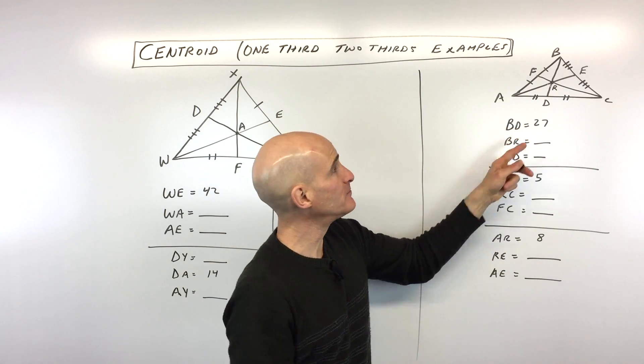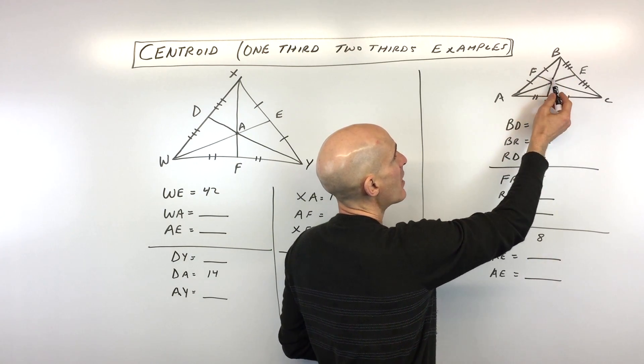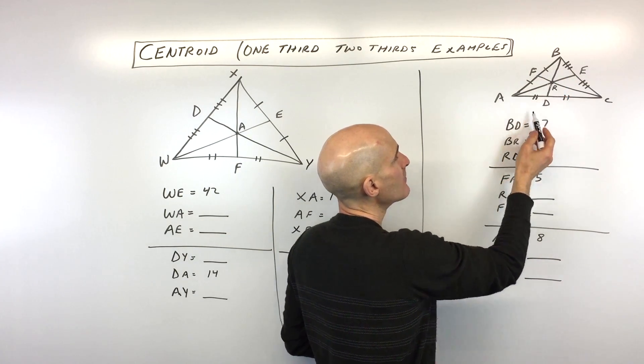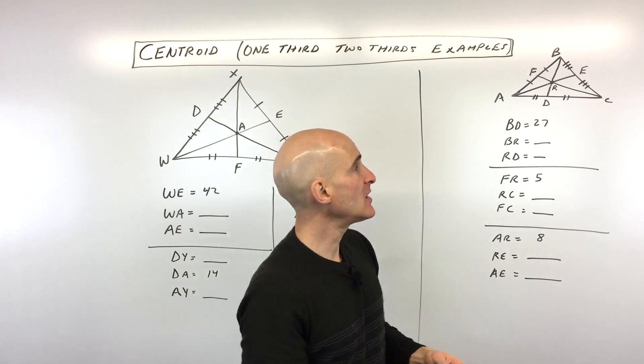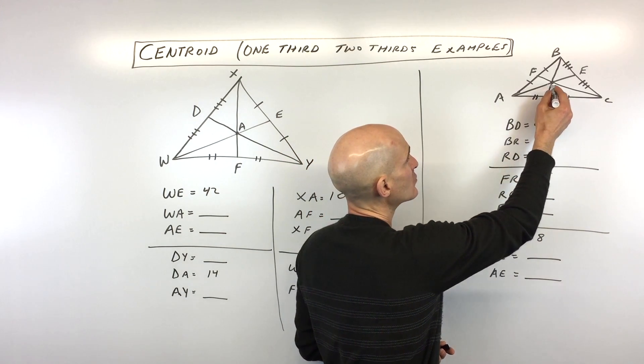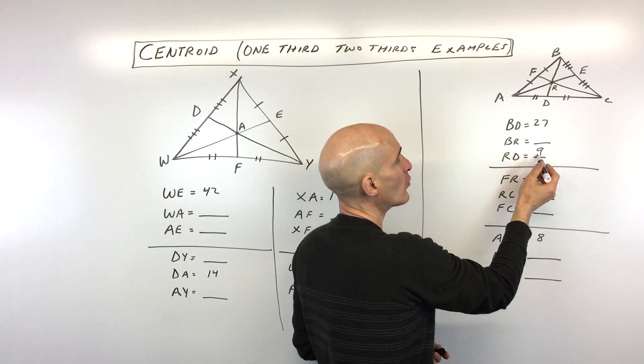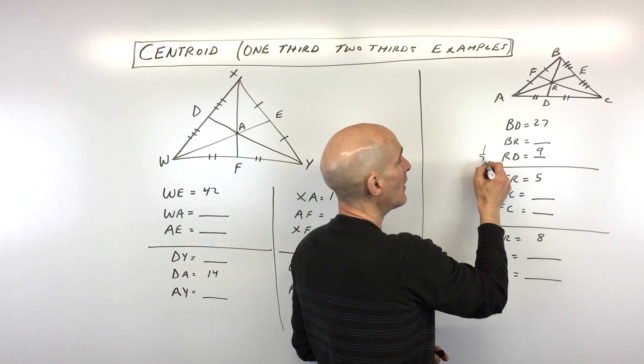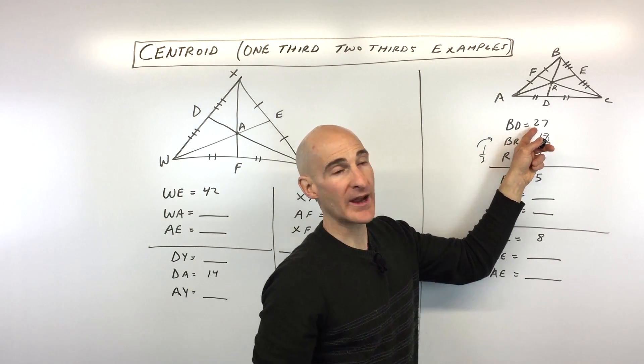Okay, so BD is equal to 27. So that's this whole length here. We want to find out what the length of BR is and RD. I usually find the smaller one first because one-third is easy to work with. You just divide by three. You take 27 and divide by three, that's going to be nine. Okay, so right here, nine. And then BR is going to be two-thirds of 27, or you can just double one-third to get the two-thirds, and that's going to be 18. And you can see these two add up to the whole length.